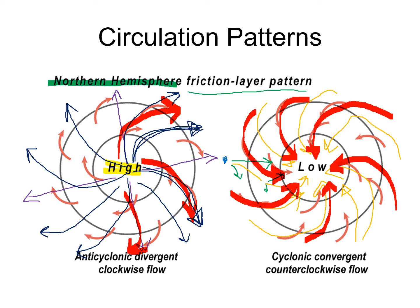To summarize: for a high pressure center — an anticyclone — we see an outward clockwise spiral in the northern hemisphere, called anticyclonic movement. For a low pressure center — a cyclone — we see an inward counterclockwise spiral, called cyclonic movement. This will be very important when we look at storms and both local and global wind patterns coming up at the end of this chapter.